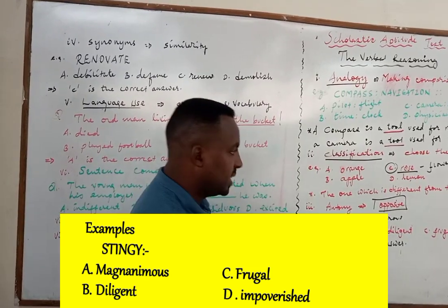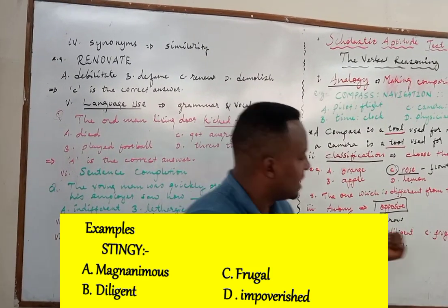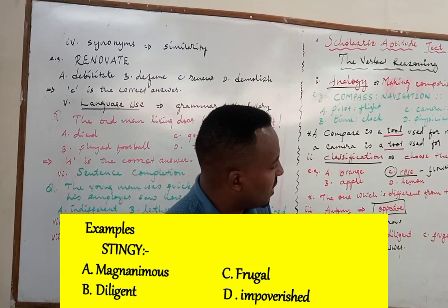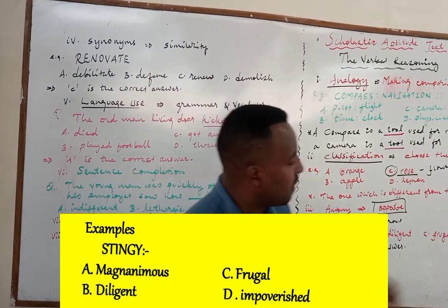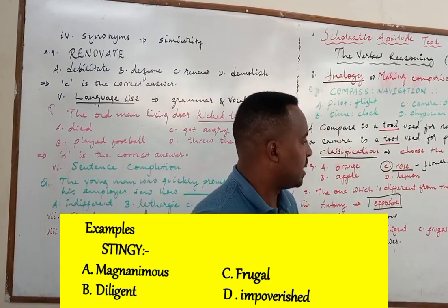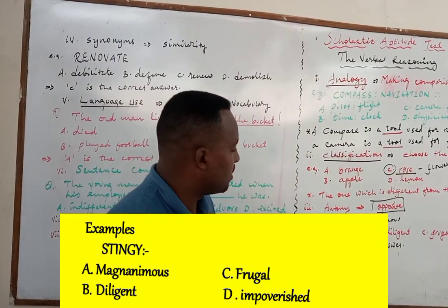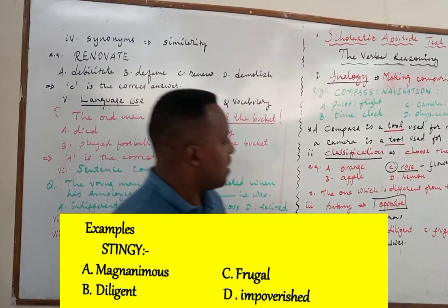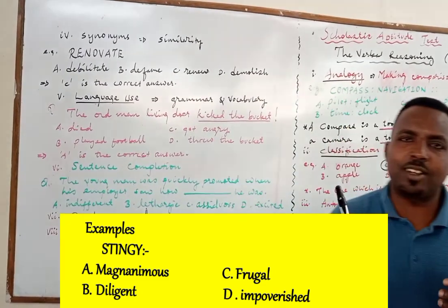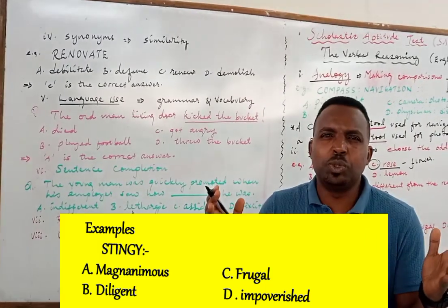There is another meaning for impoverished — it means very poor. The one which is the opposite of stingy is magnanimous, which means generous. You have to practice many questions, especially from the national exam, to improve day by day.